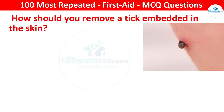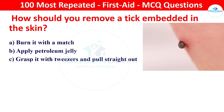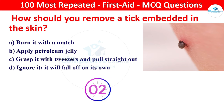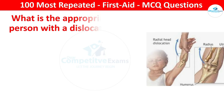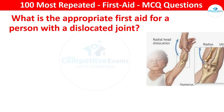Next question: how should you remove a tick embedded in the skin? Options: burn it with a match, apply petroleum jelly, grab it with tweezers and pull straight out, or ignore it as it will fall off on its own. The right answer is use tweezers to grasp the tick as close to the skin's surface as possible and pull upward with steady, even pressure.